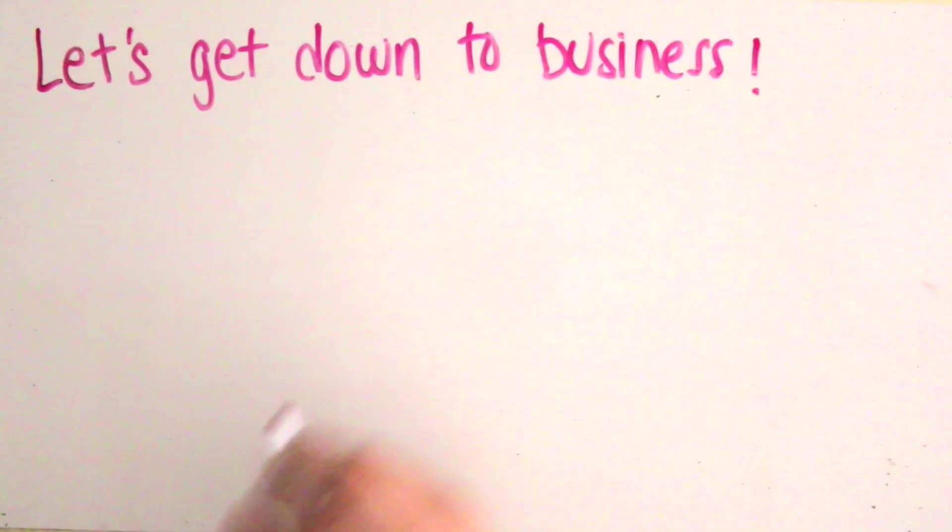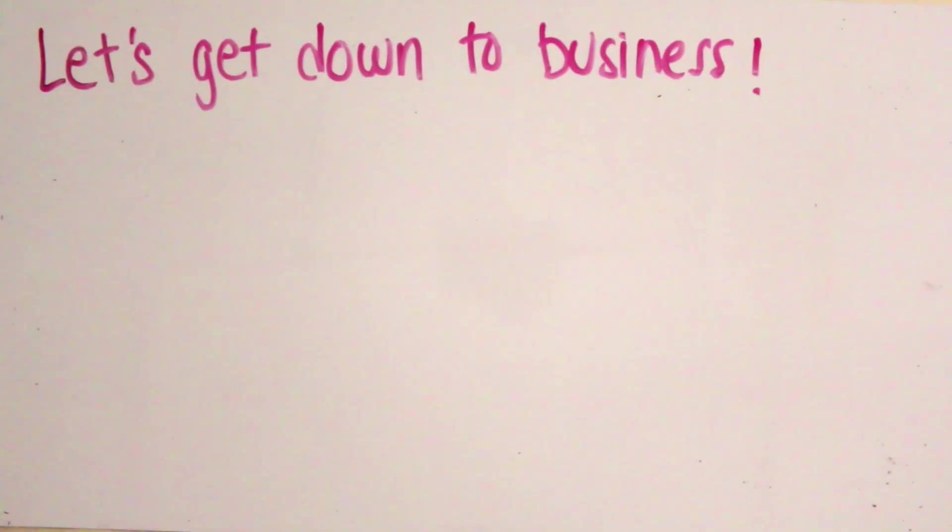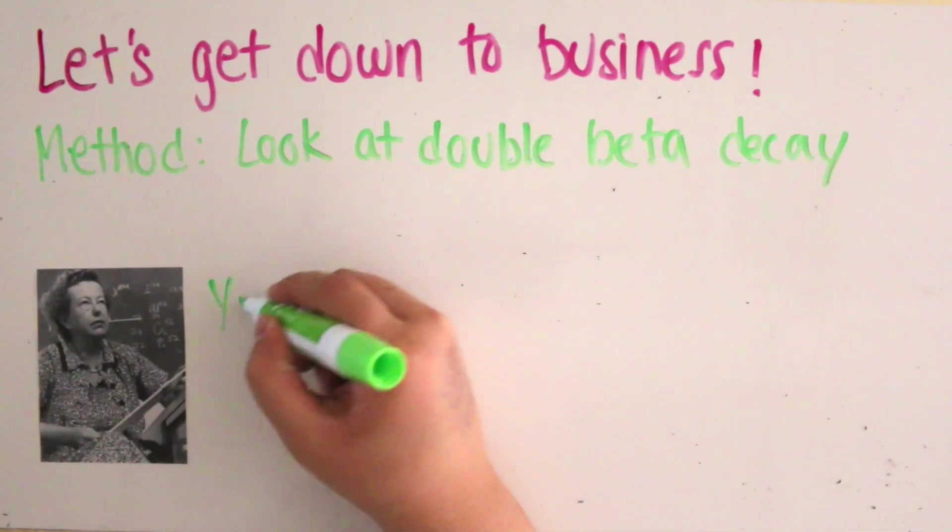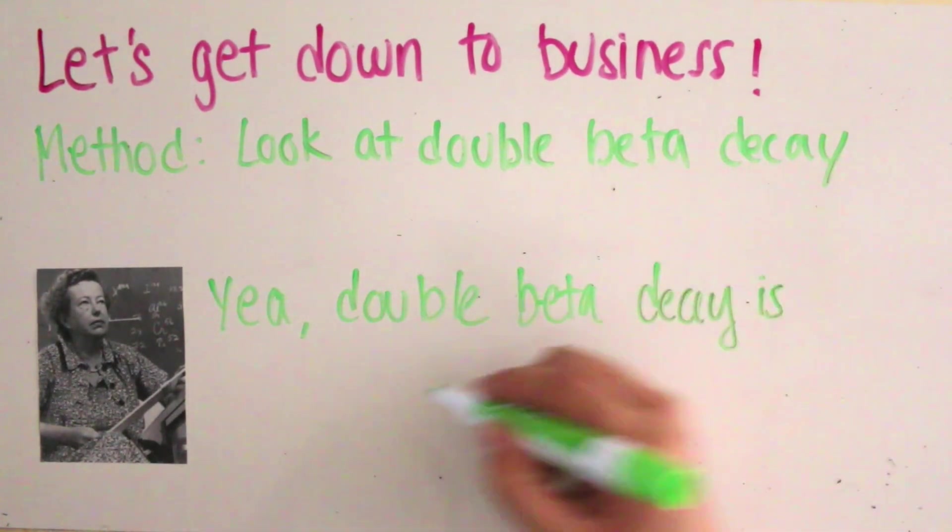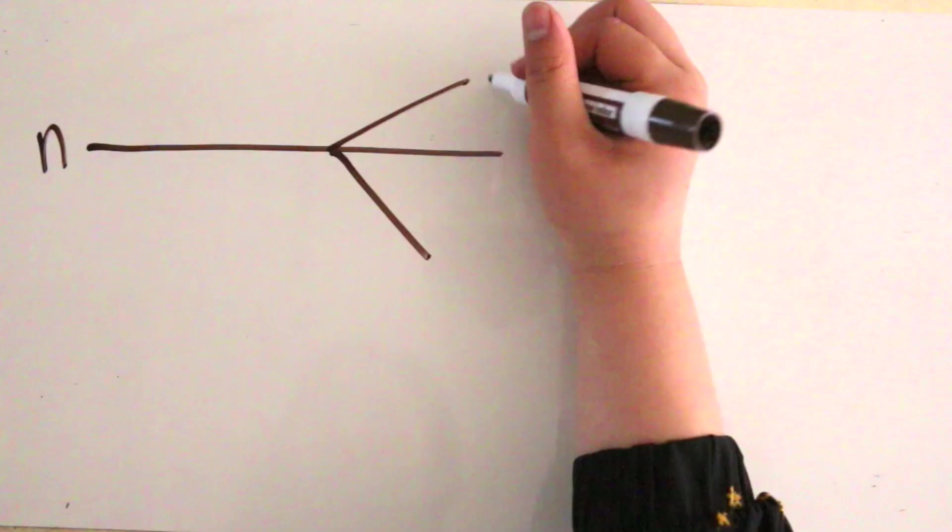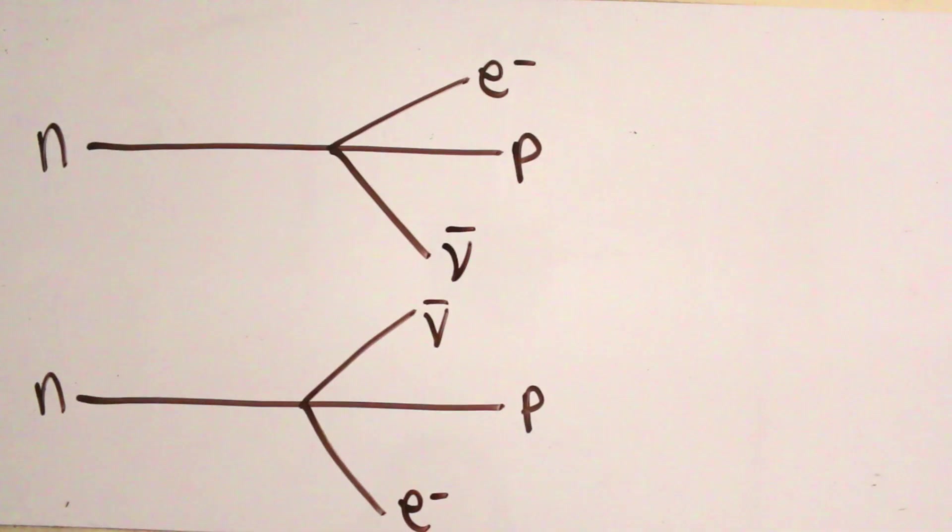To determine whether or not the neutrino is its own antiparticle, we will look at double beta decay, an event theorized by Maria Goeppert-Mayer in 1935. Double beta decay is when two beta decays happen simultaneously.